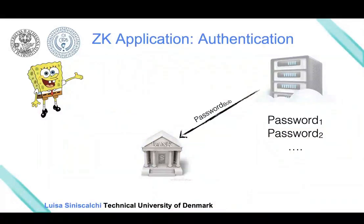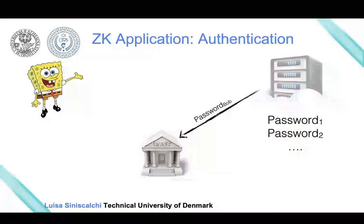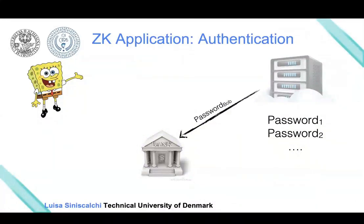In this specific example, Bob is trusting the server not to sell his password to anyone else—basically trusting the server to be honest. What we can do using zero-knowledge is remove this assumption. Instead, we can just show to the server using zero-knowledge—proving in zero-knowledge—that Bob knows a password for this service.